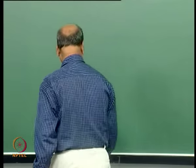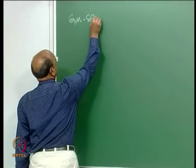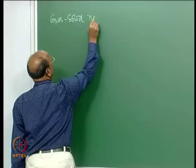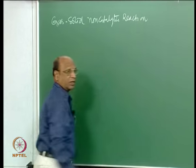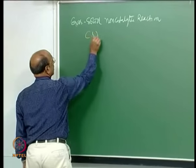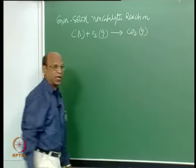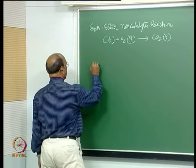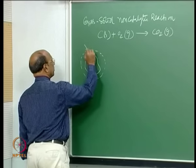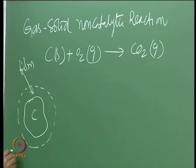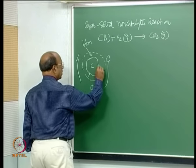Various systems were discussed, starting with the gas-solid reaction. The example taken was carbon solid plus O2 gas giving CO2 gas. The model imagines a solid carbon particle surrounded by a film, with O2 all around. O2 has to diffuse to the surface, and CO2 has to come out.